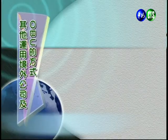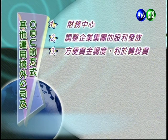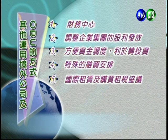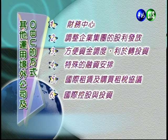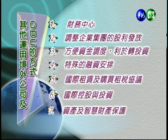境外公司與OBU帳戶的其他運用方式包括：第一，作為財務中心；第二，調整企業集團的股利發放；第三，方便資金調度，利於轉投資；第四，特殊融資安排；第五，國際租稅及購買租稅協議；第六，國際控股與投資；第七，資產與智慧財產權的保護。除了節稅與控股，這些也都是境外公司的重要優點，能讓企業營運更加穩當。